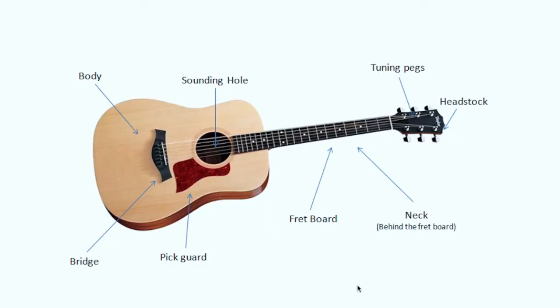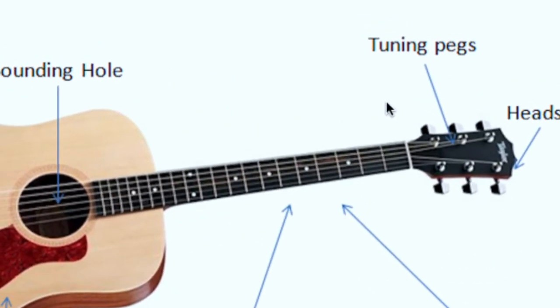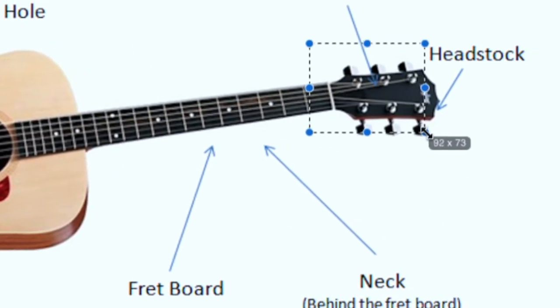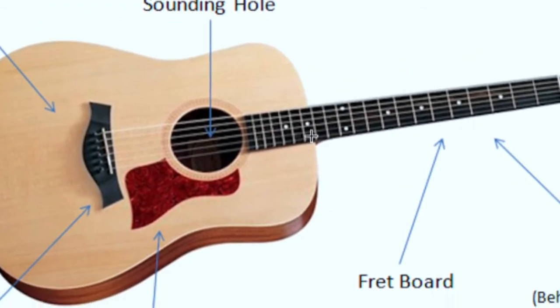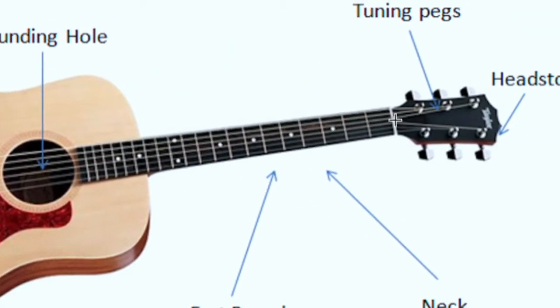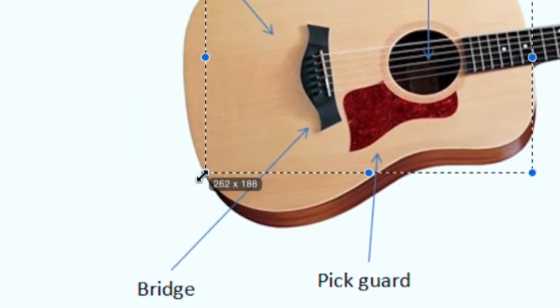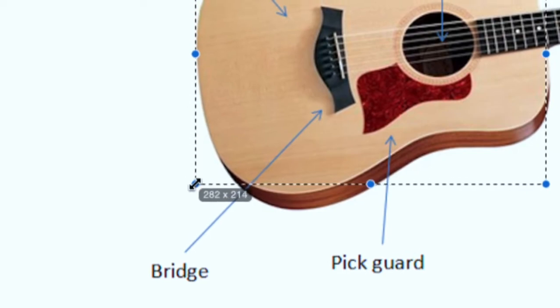The guitar is usually divided into three major parts: the head, the neck, and the body. This part is the head, this part is the neck, and this part is the body.